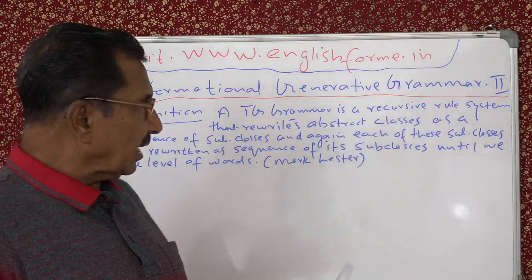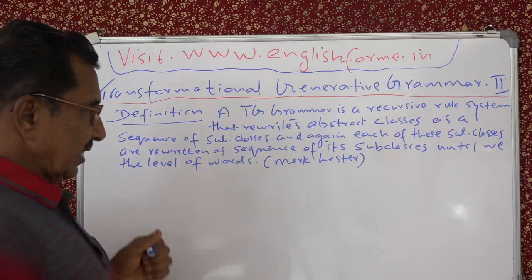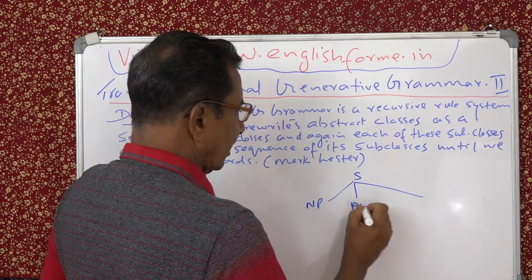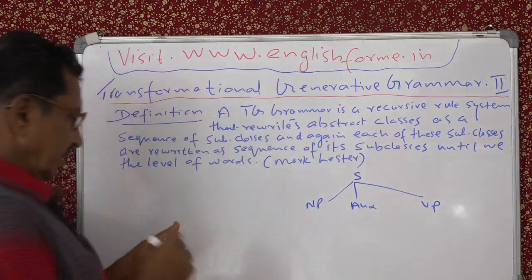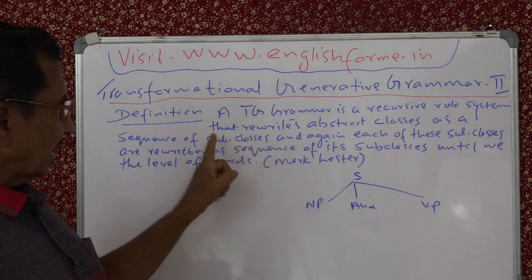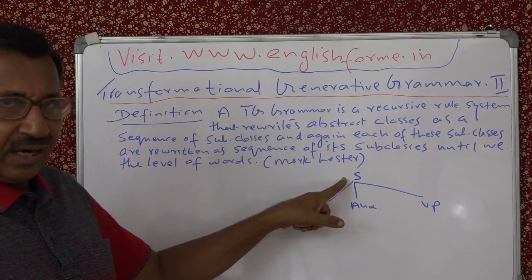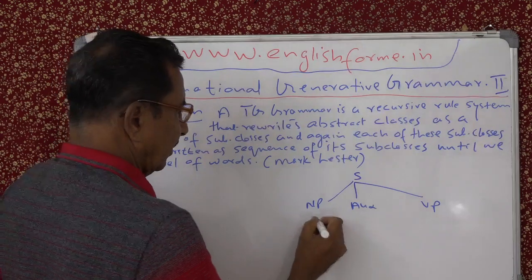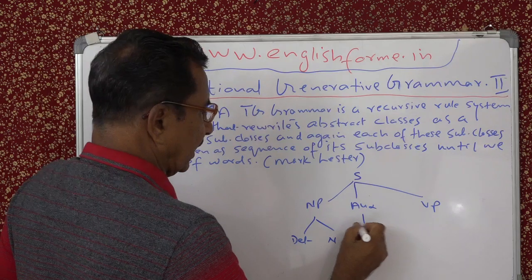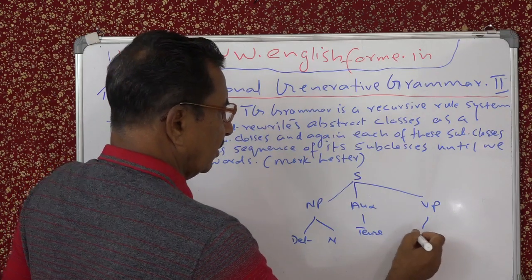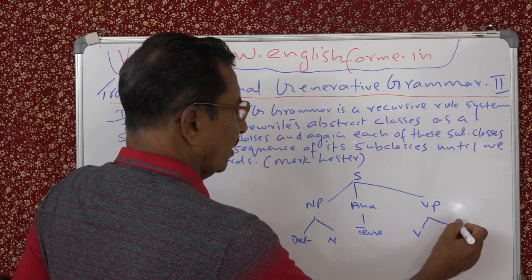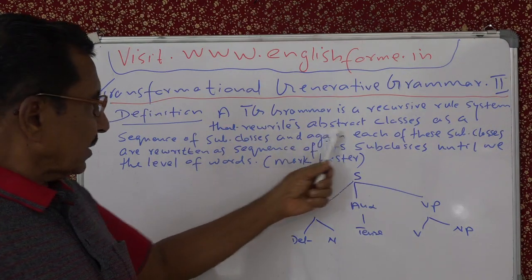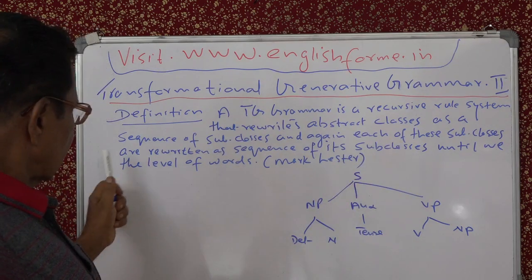It is a rule system that rewrites abstract classes as a sequence of subclasses. You can see your sentence S — you rewrite it as abstract classes, as a sequence of subclasses. S is abstract, so we are rewriting it in subclasses. That sequence is rewritten again. The terminal: noun, auxiliary, tense, and you have got the main verb, and then a complement or NP.